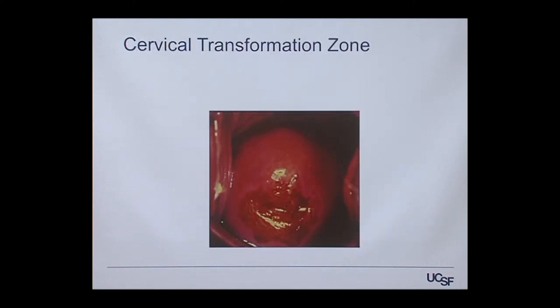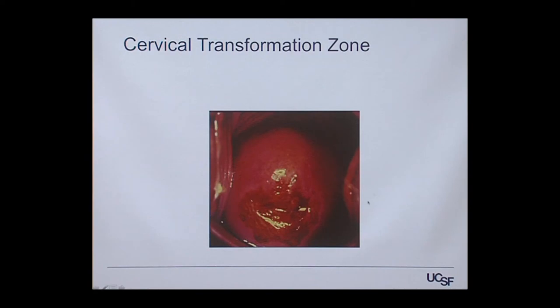The unique thing about the cervix in terms of prevention and screening is that we can see it. Women are familiar with the process where a speculum is placed and the provider can find the cervix, visualize it, and test it for signs of changes that could lead to cancer. This makes it a very unique organ and explains why cervical cancer screening has been so successful.